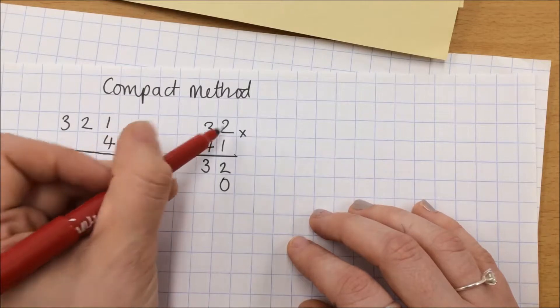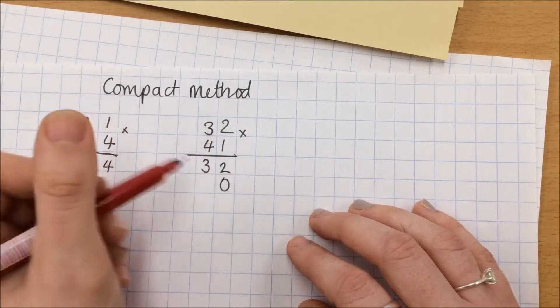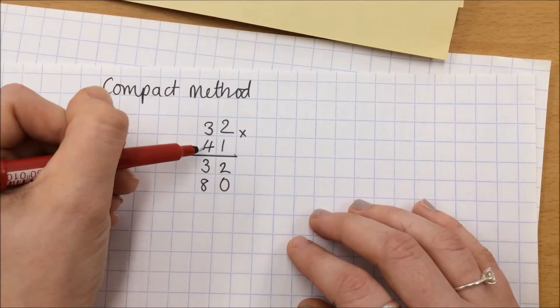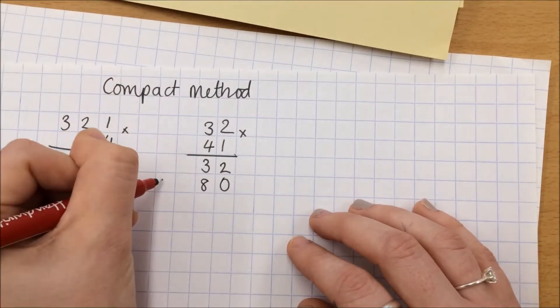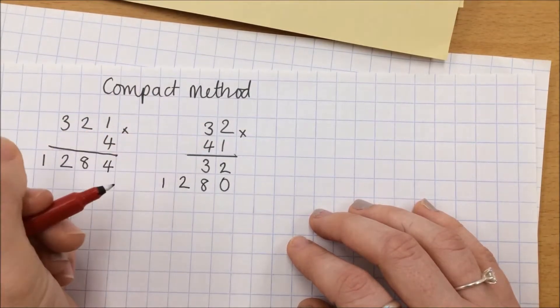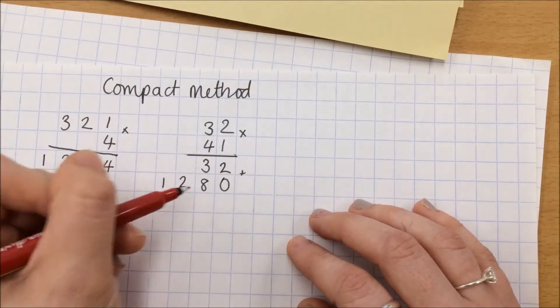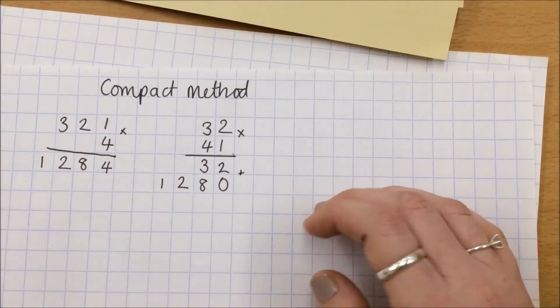So 4 multiplied by 2, or 40 multiplied by 2 is 80, and 40 multiplied by 30 is 1200. Now because I've got that underneath I can now add that up in a column method.